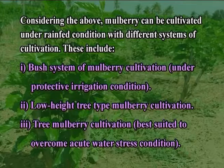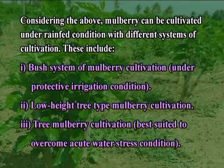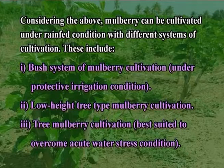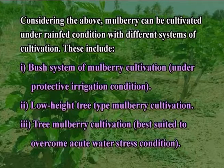Considering the above, mulberry can be cultivated under rainfed conditions with different systems of cultivation. These include: first, the bush system of mulberry cultivation under protective irrigation conditions; second, low height tree type mulberry plantation; and third, tree mulberry cultivation, which is best suited to overcome acute water stress conditions. The study revealed that water is the most important input among all agronomic inputs to which mulberry responds well and quickly. Hence, it is necessary to conserve soil moisture under rainfed conditions through watershed, mechanical and agronomical approaches for maximisation of leaf yield and quality.